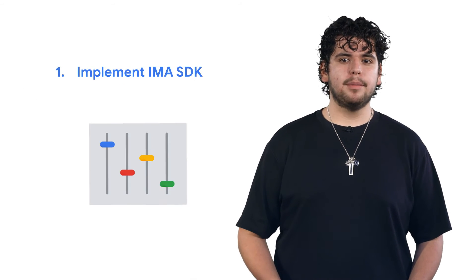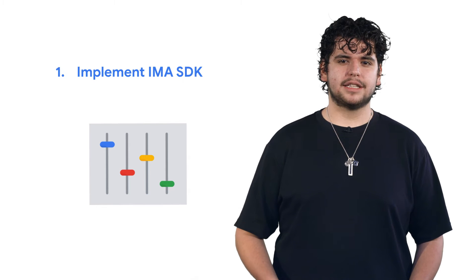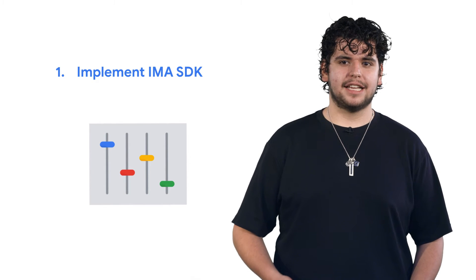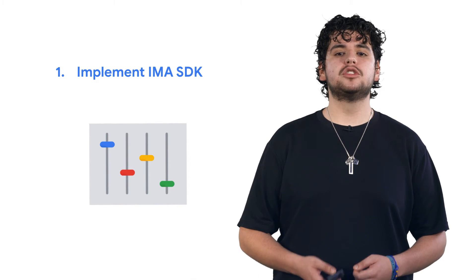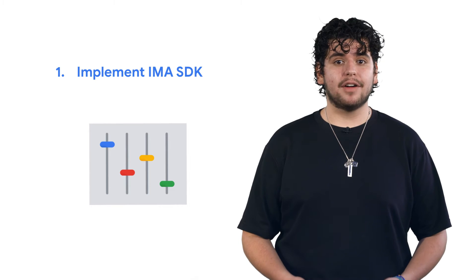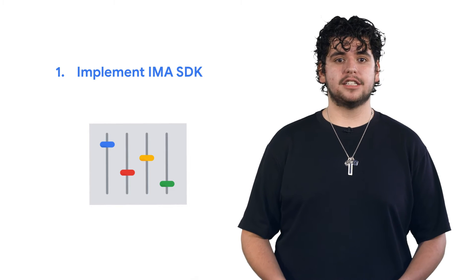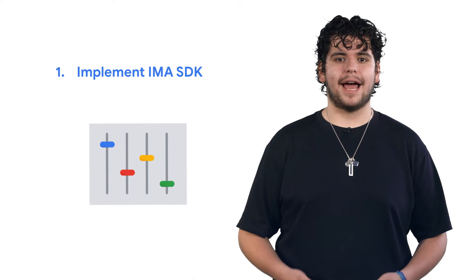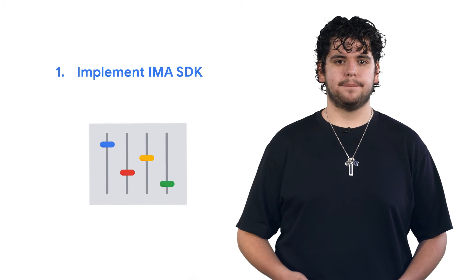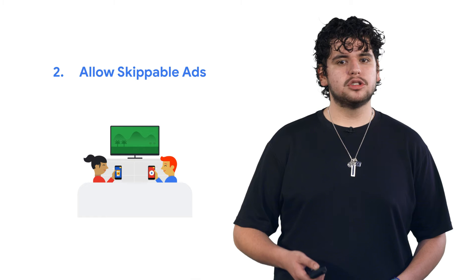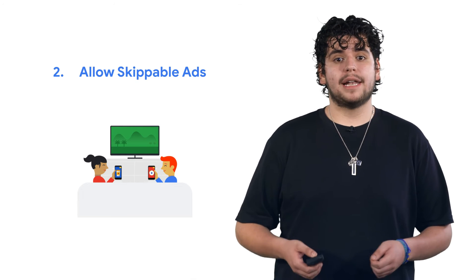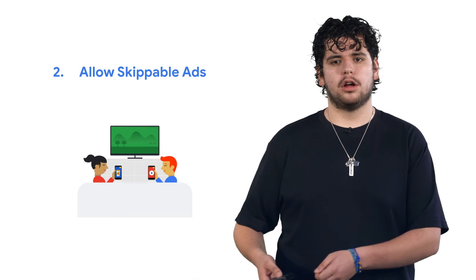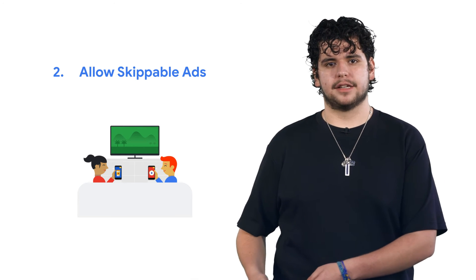First, implement the Google Interactive Media Ads SDK, or IMA SDK, our open-source video player. It simplifies monetizing digital inventory and maximizes your ads demand. Second, enable skippable ads in your inventory by going to your line items and turning it on in the creative settings.